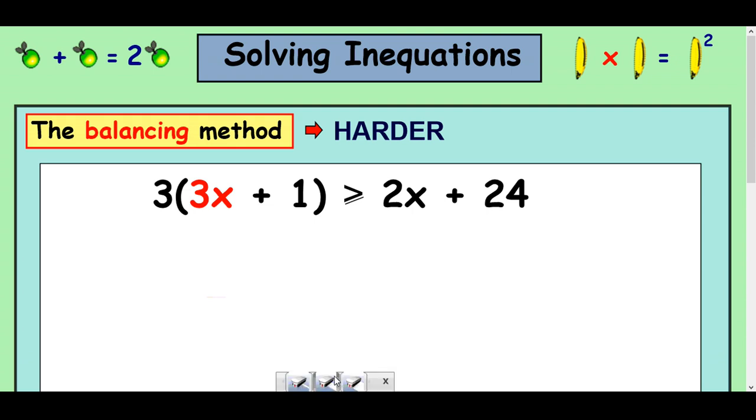We're going to look at these two and then that will finish the lesson off. So again, you've seen these kind of things if you've watched the equations lessons with brackets and x's on both sides, you apply exactly the same techniques. So the first thing, let's multiply the bracket out. So 3 times 3x is 9x and then add on 3 times 1, which is 3. It's greater than or equal to 2x, add 24.